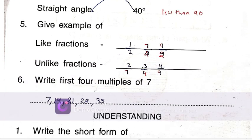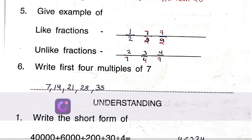You can check the spelling from here also. Like fractions have the same denominator. Unlike fractions have different denominators.